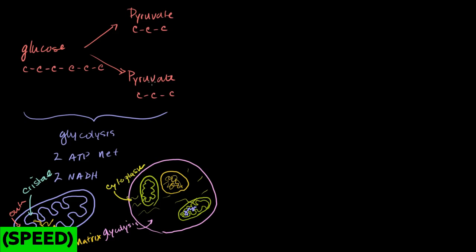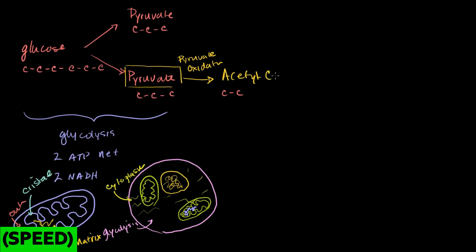You have these pyruvates, but they're not quite ready for the Krebs cycle. There's a preparation step called pyruvate oxidation. It cleaves one carbon off of the pyruvate, so you end up with a two-carbon compound called acetyl-CoA. Remember this happens twice for every molecule of glucose. This process also reduces some NAD+ to NADH. So it generates acetyl-CoA — the two-carbon compound — and reduces NAD+ to NADH.